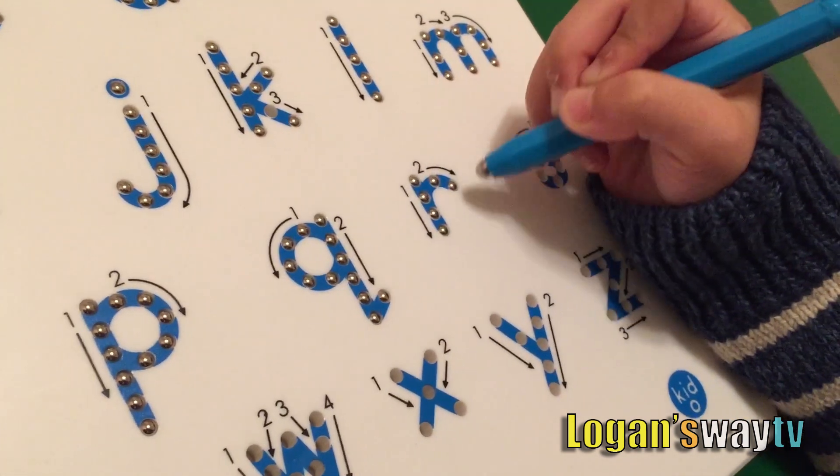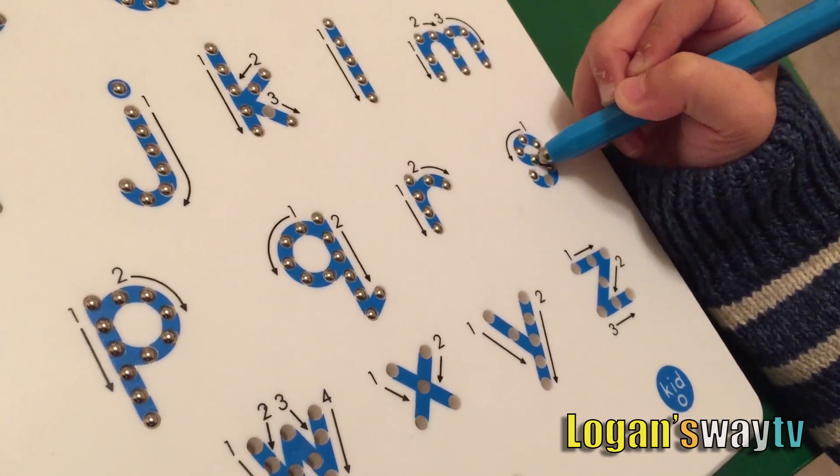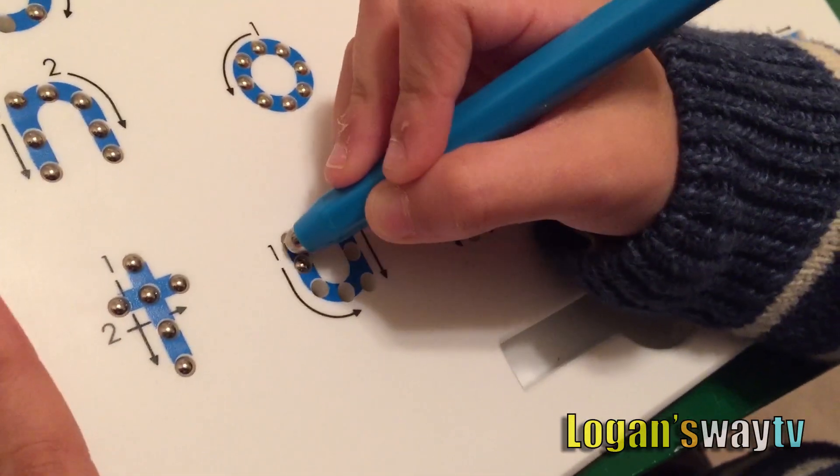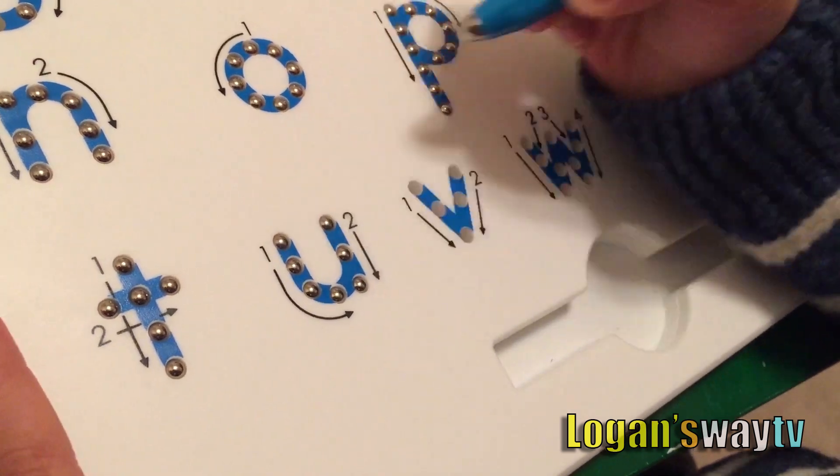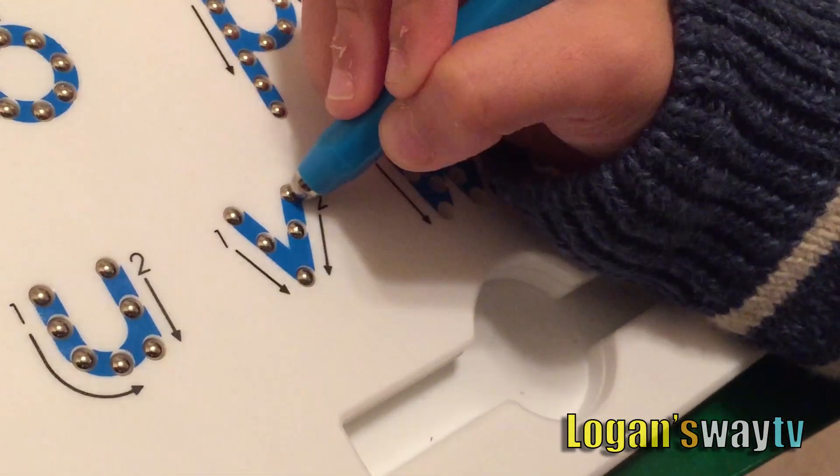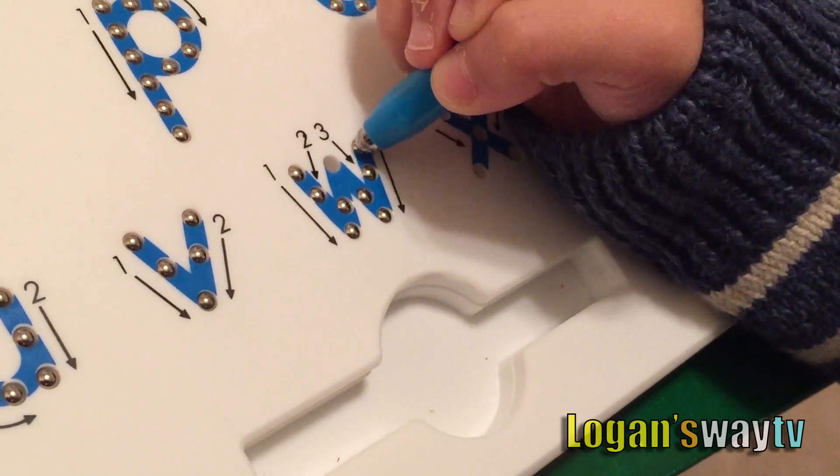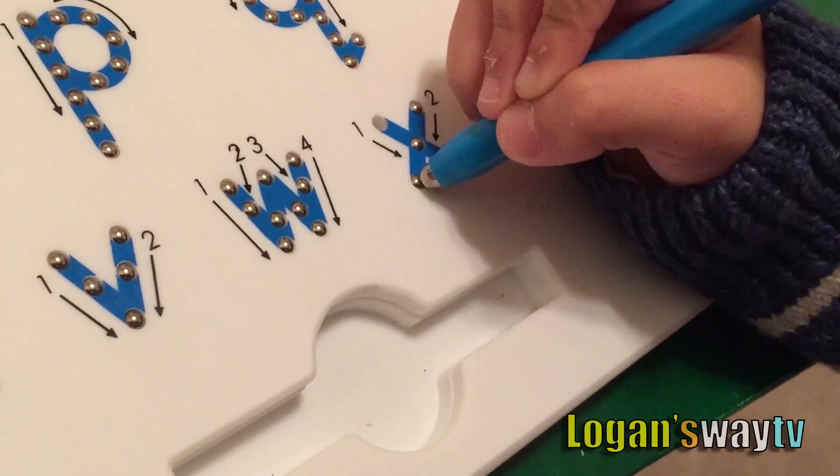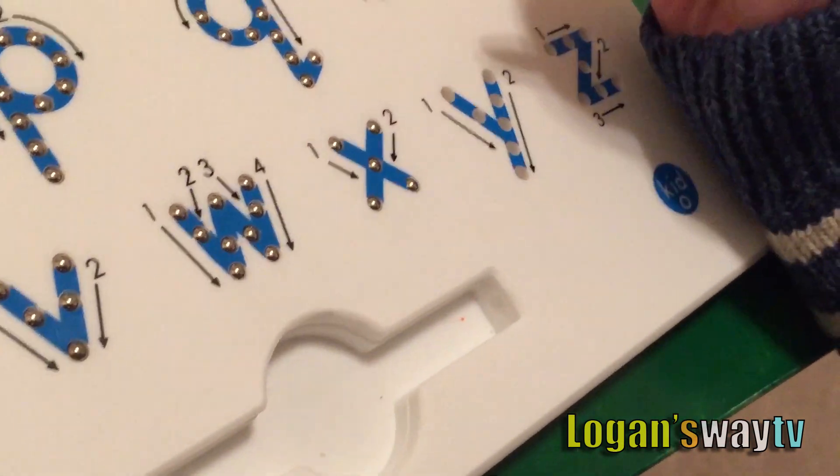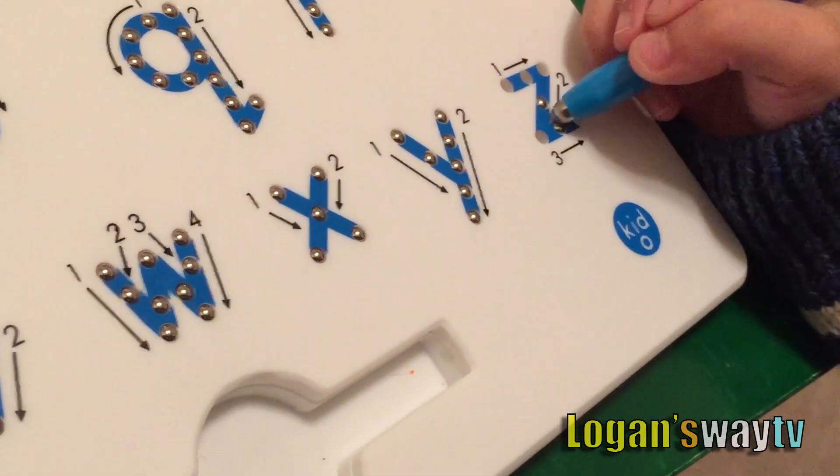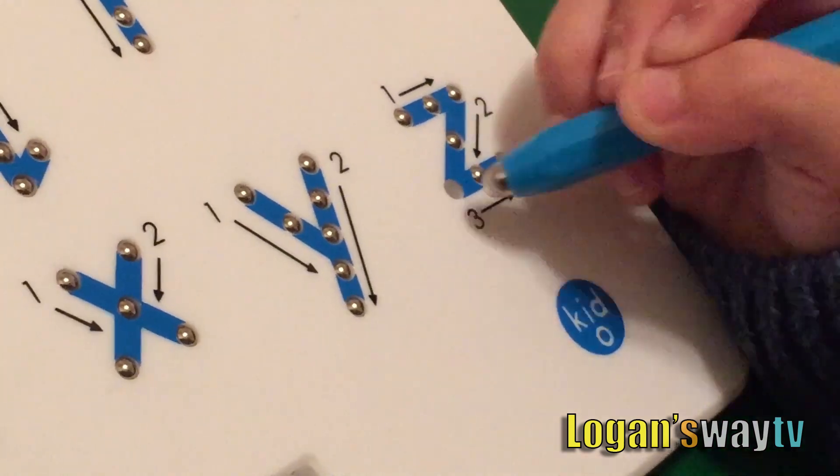R is for rainbow, S is for sun, T is for tiger, U is for umbrella, V is for van, W is for water, X is for x-ray, Y is for yellow, Z is for zoo.